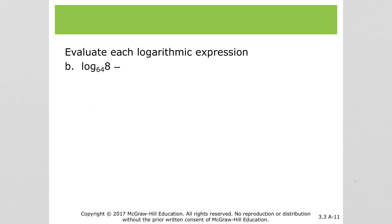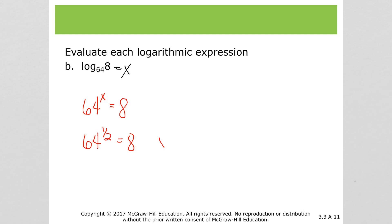Here we can say equals x again. So we've got 64 to the x power equals 8. Well, 64 to the what power would give us 8? We know the square root of 64 is 8, and square root is the same as an exponent of 1/2. So that means that x is 1/2.